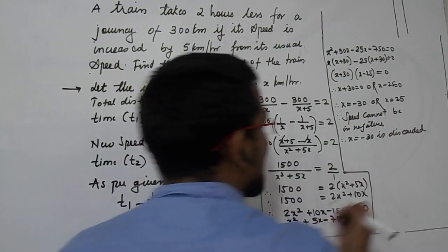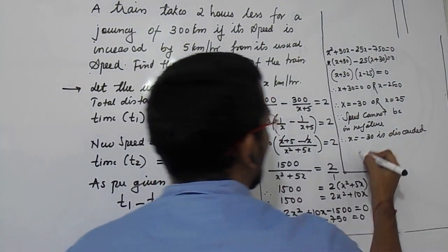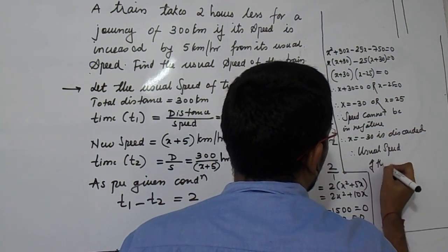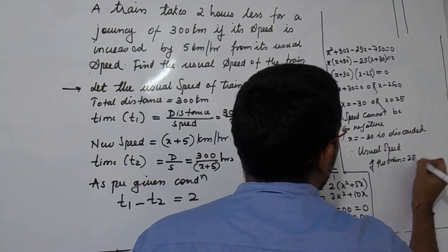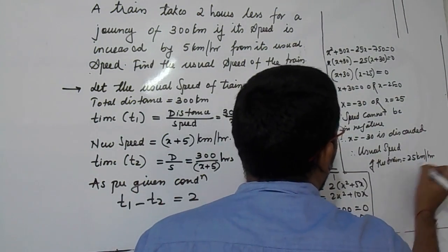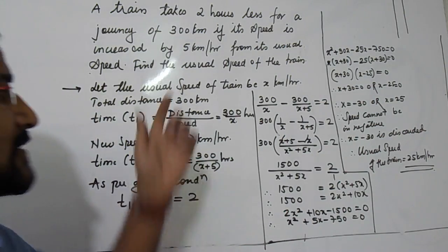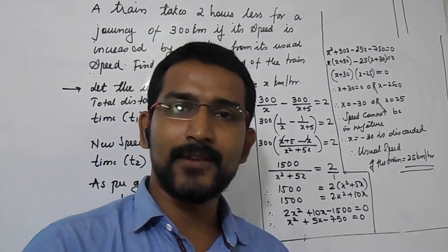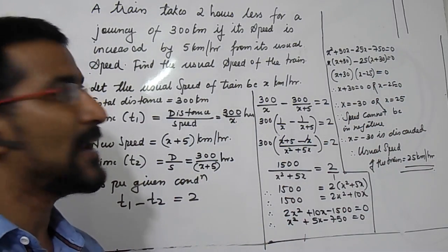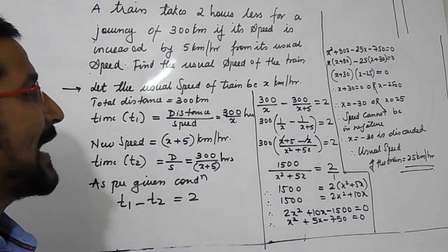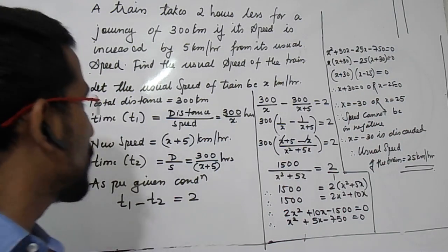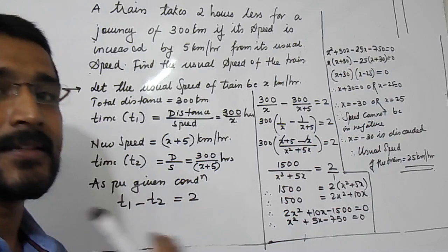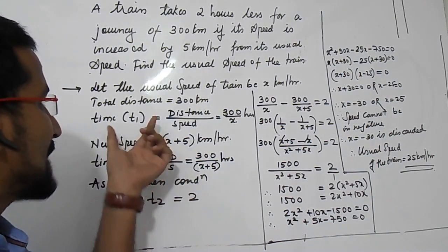Therefore the usual speed of the train is 25 km per hour. As per the given condition, the usual speed of the train was 25 km per hour. This is how we solve examples based on speed, time, and distance — take usual speed as x, and make the equation in terms of time using time equals distance divided by speed.